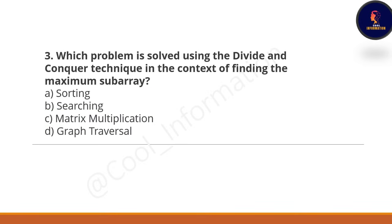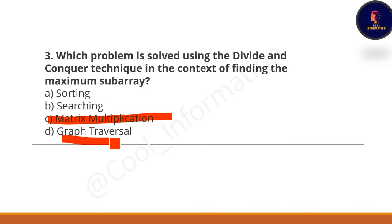Next question: which problem is solved using the divide and conquer technique in the context of finding the maximum survey? Option A is sorting, Option B is searching, Option C is matrix multiplication, and Option D is graph traversal. The correct option is Option B — searching.